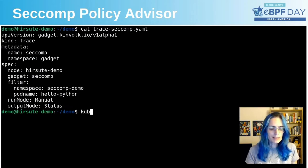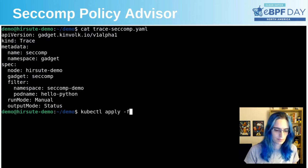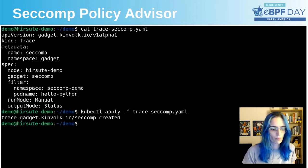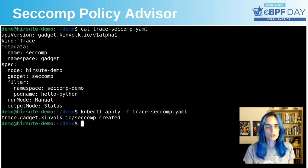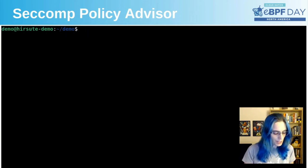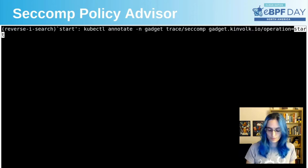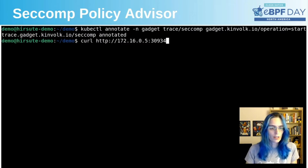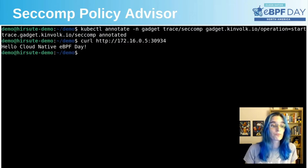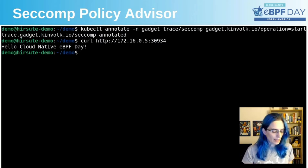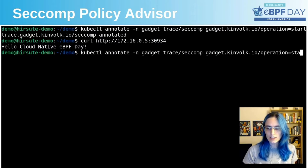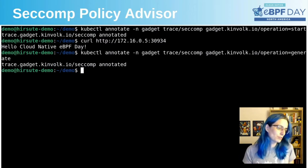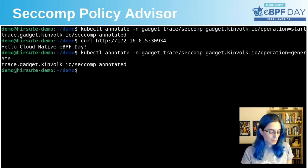So let's apply this. We have the resource created. To start tracing, we need to annotate it with a start operation. So this is now tracing. And if we curl our service again, this syscall will get caught by our gadget. And if we now annotate with generate instead of start, it should have generated the seccomp policy, and it's stored in the status.